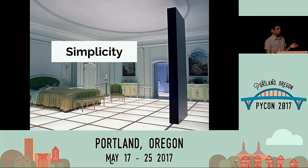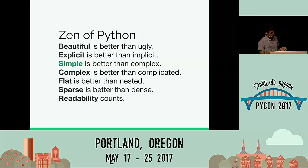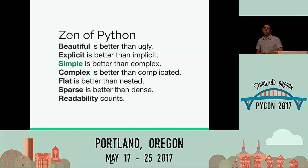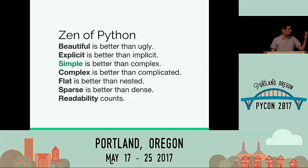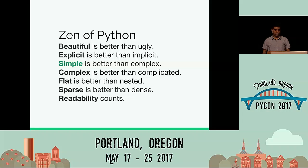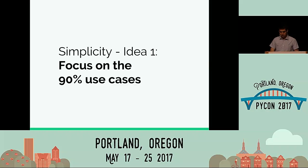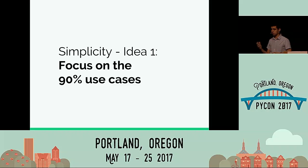First: simplicity. The design of Python talks a lot about simplicity — it's in the core design of Python. This is something we need to care about when writing our APIs. Beautiful is better than ugly, explicit is better than implicit, and so on. This is all nice, but how do we achieve that?